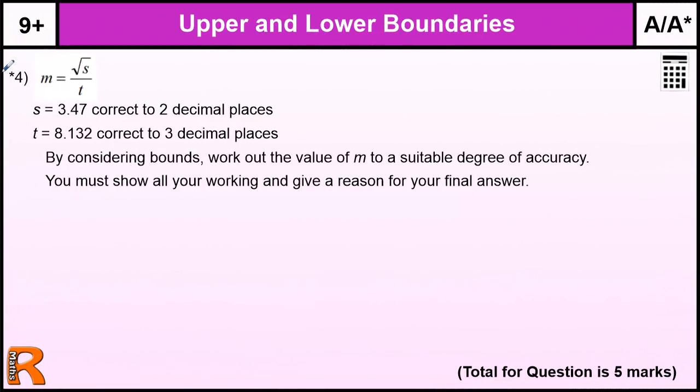Question four. This is a starred question, which means it's worth a few extra marks. I've left this question until last. It's unusual because we have a bit more sophistication to it. By considering bounds, work out the value of M to a suitable degree of accuracy. So this is what upper and lower boundaries are all about - realizing if you've done a calculation using rounded values, how accurate is the actual calculation? The standard thing is to work out the maximum minimum value. This is two decimal places. The number below 3.47 is 3.46 and 3.48 is the number above. Our boundaries between these numbers are 3.465 and 3.475.